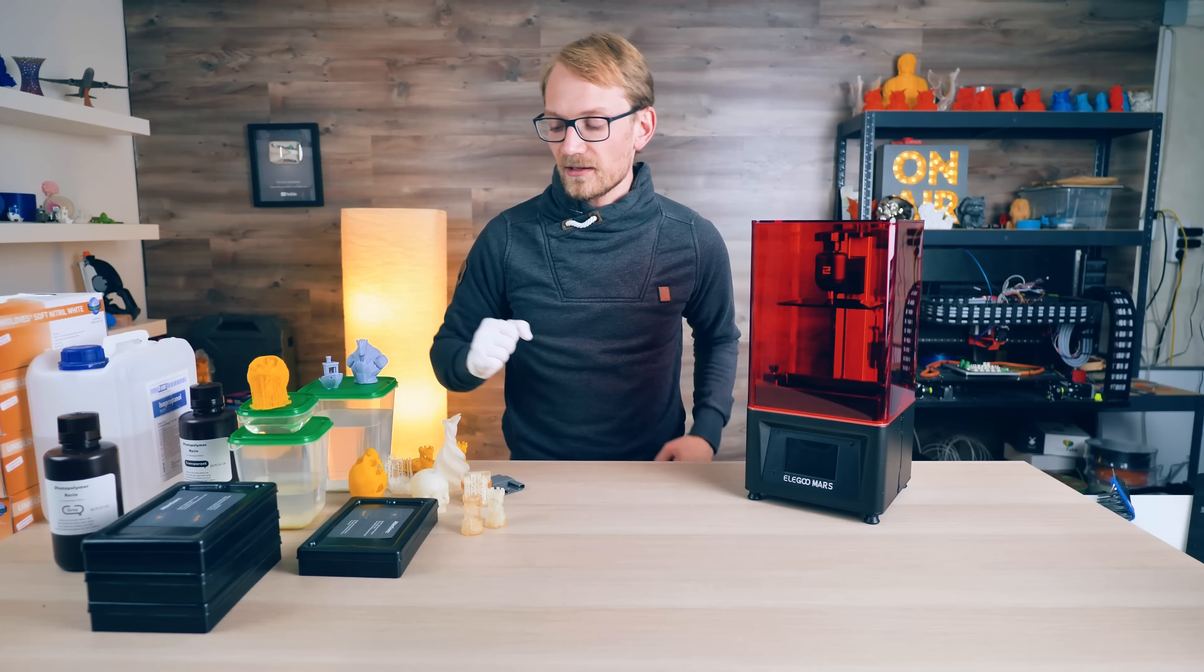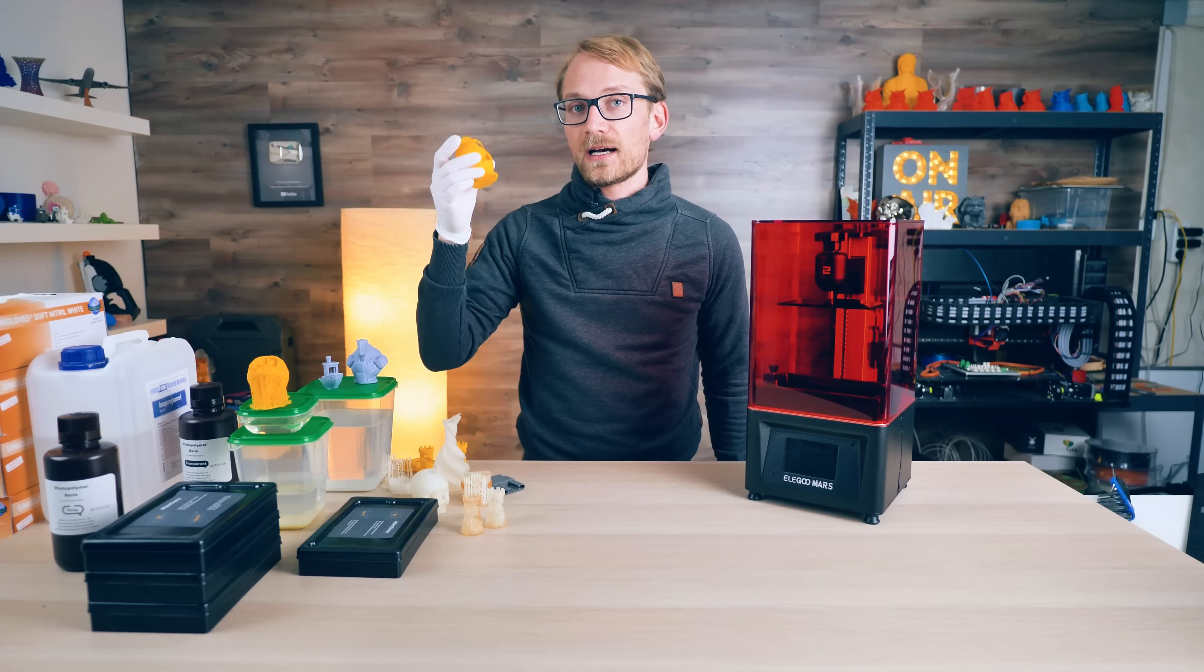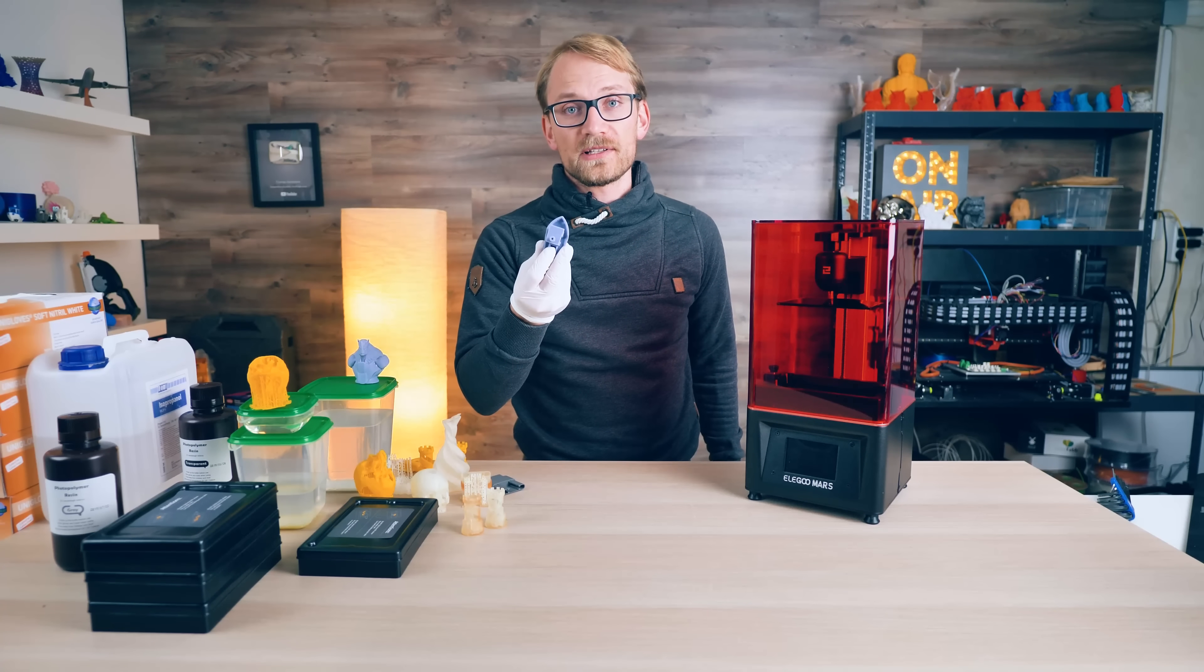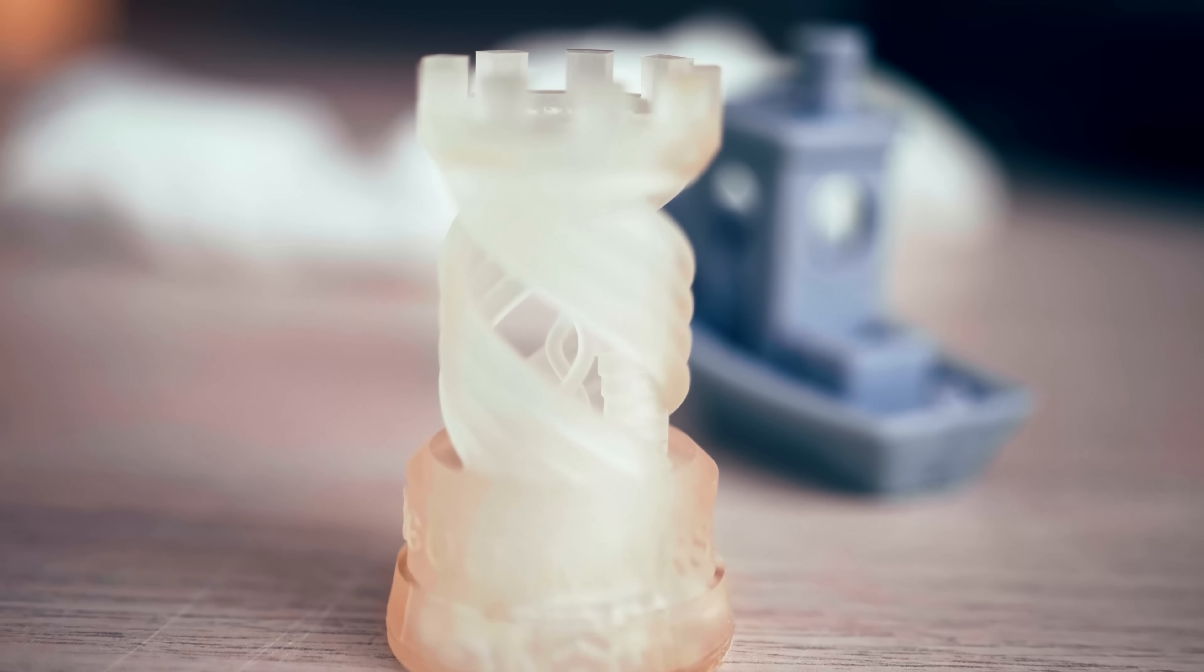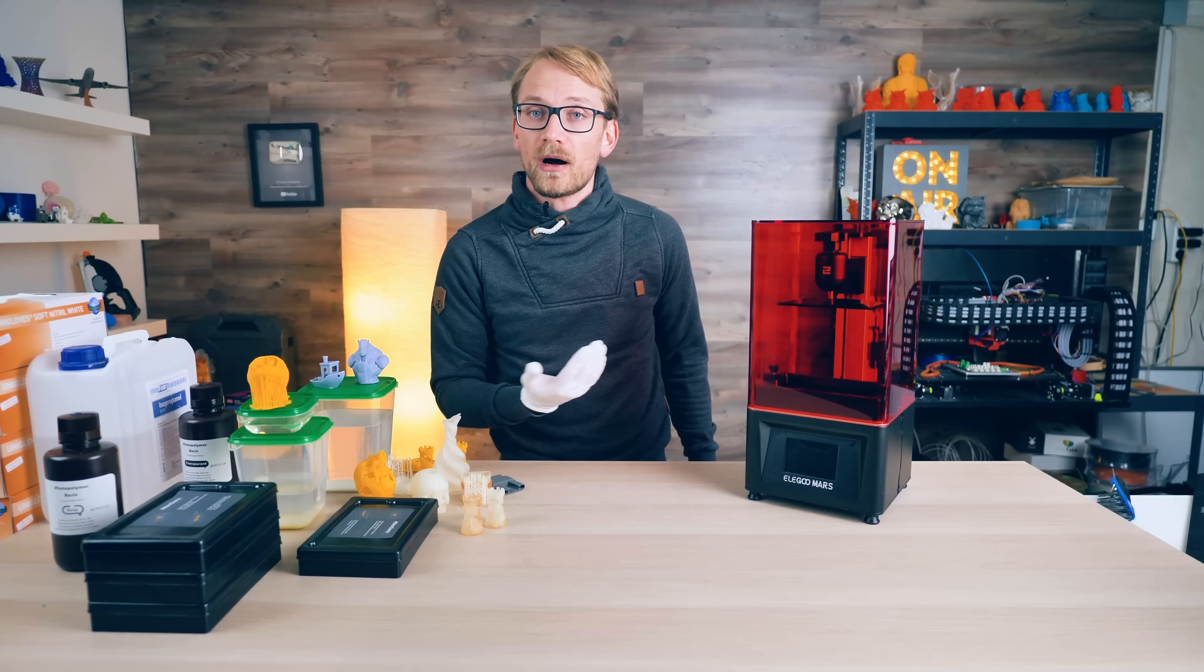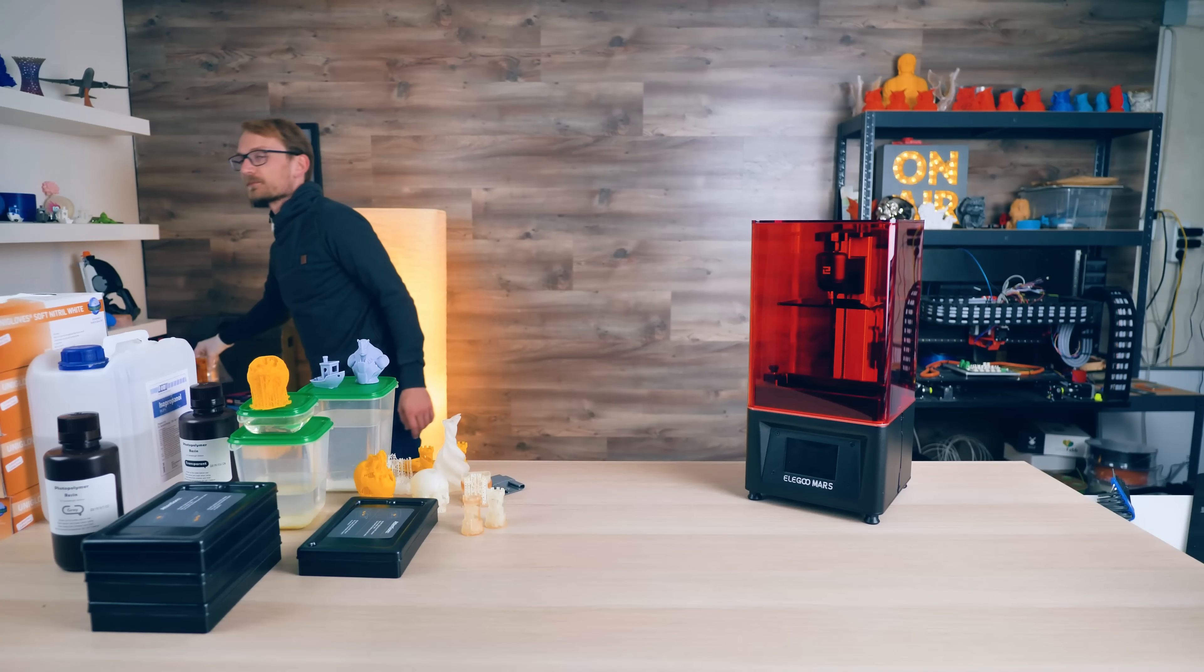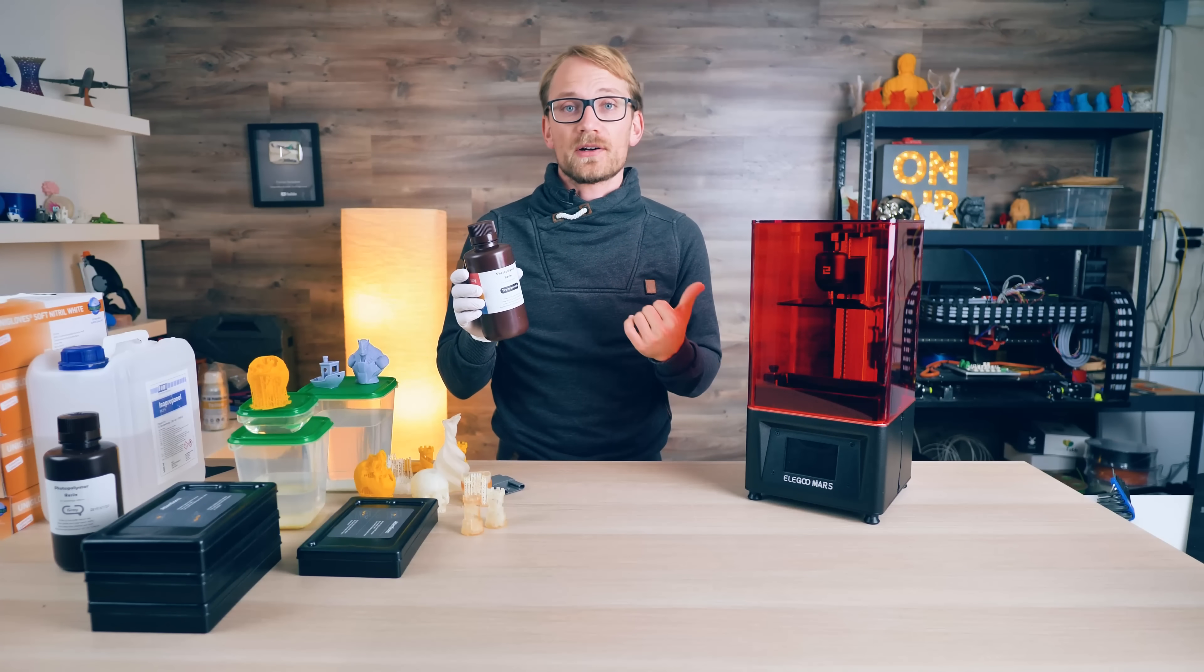So, what did you see there? The yellow parts were printed with Wanhao resin, and the clear and grey parts were printed with Elegoo's own resin. And there is a massive difference between the two. I was never happy with the way the Wanhao D7 performed, possibly because I only ever used the Wanhao resin with it.